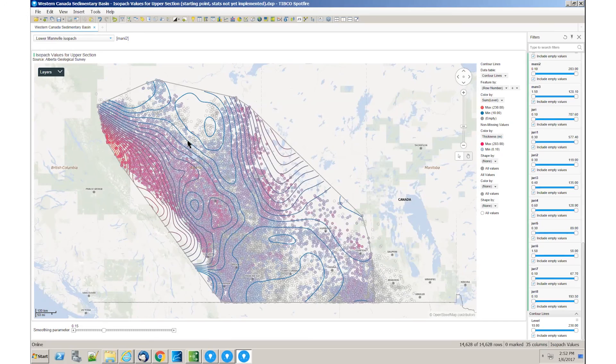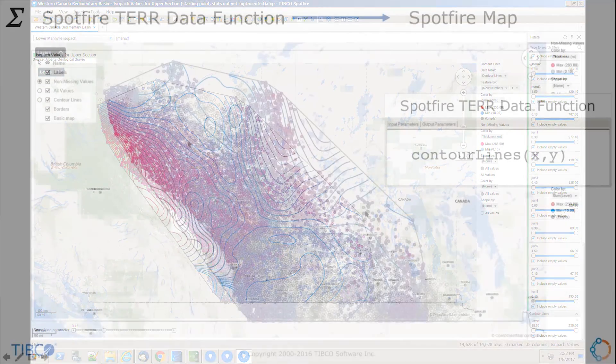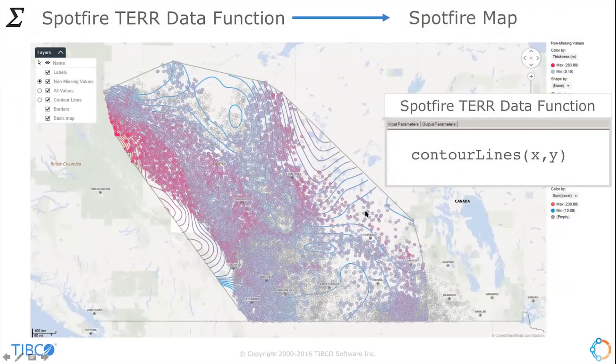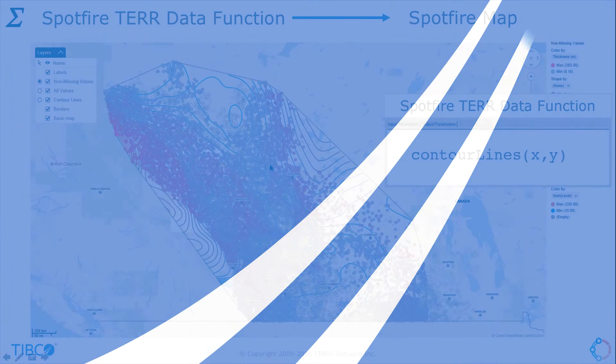Now that is a data function that you saw me map. There you saw an example of a Spotfire TAIR data function used to add contour lines onto a map chart.